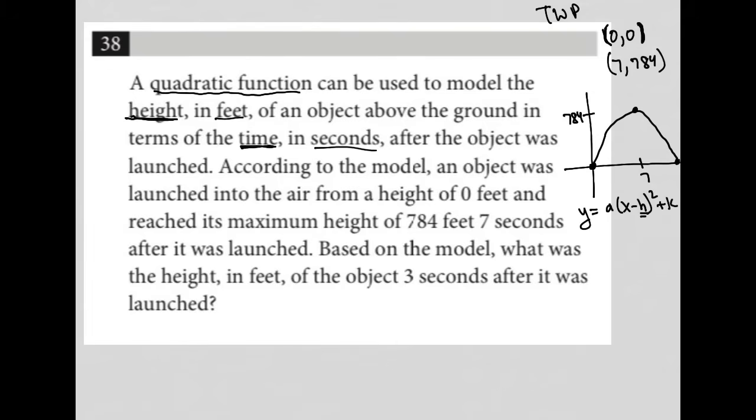Where h is the x value of the vertex. For us, we know that's 7, so h equals 7. And k is the y value of the vertex. For us, we know that's 784, so k equals 784. So my equation or my model is y equals a(x minus 7) squared plus 784.